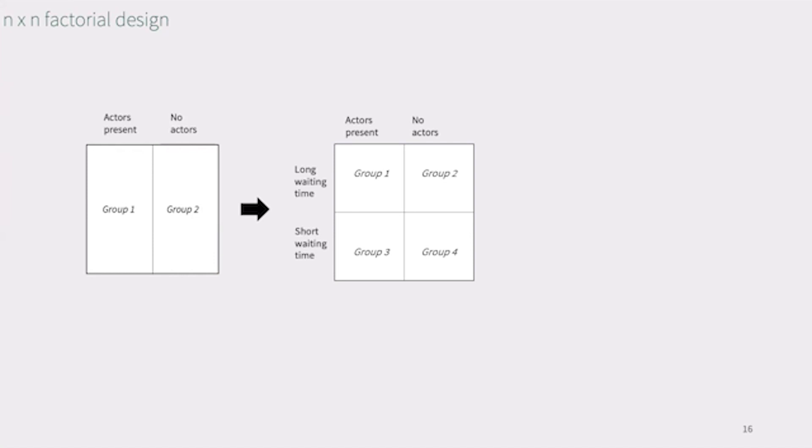Now, what happens if we want to add another variable? For example, we may hypothesize that the waiting time influences whether a person is going to follow the social cue of the actors crossing the street or not. Assume we manipulated waiting time, too. That would leave us with a two-by-two factorial design, namely, the condition in which actors are present with a long waiting time, the condition with actors and a short waiting time, and the same without actors, a long short waiting time.